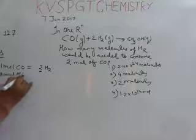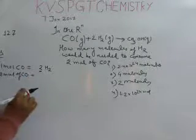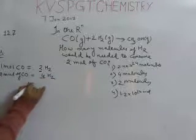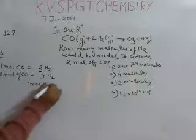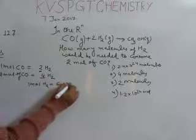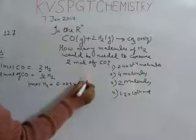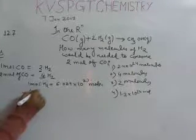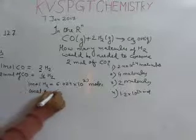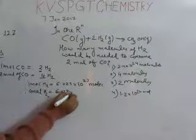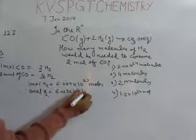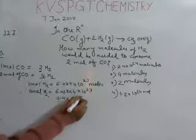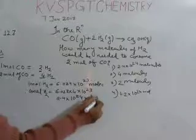Now in one mole of hydrogen, how many molecules are present? 6.023 into 10 to the power of 23 molecules are present. So therefore, in four moles of hydrogen, when you multiply, you will get 2.4 into 10 to the power of 24 molecules. So this is the correct answer and option number one is correct.